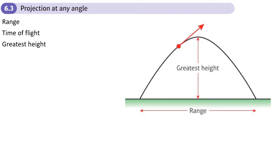Section 6.3, projection at any angle, chapter 6 of the Applied Statistics and Mechanics Year 2 book. There's not much more to it than the previous section — just a few words and terms we need to know. The working is identical to what you were doing in the previous section.